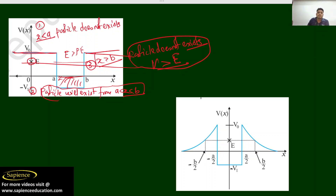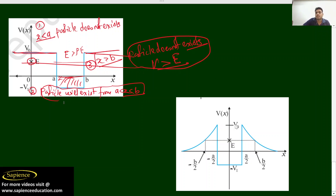For a particle to exist, potential energy must be less than total energy, or equivalently, total energy must be more than the potential energy.